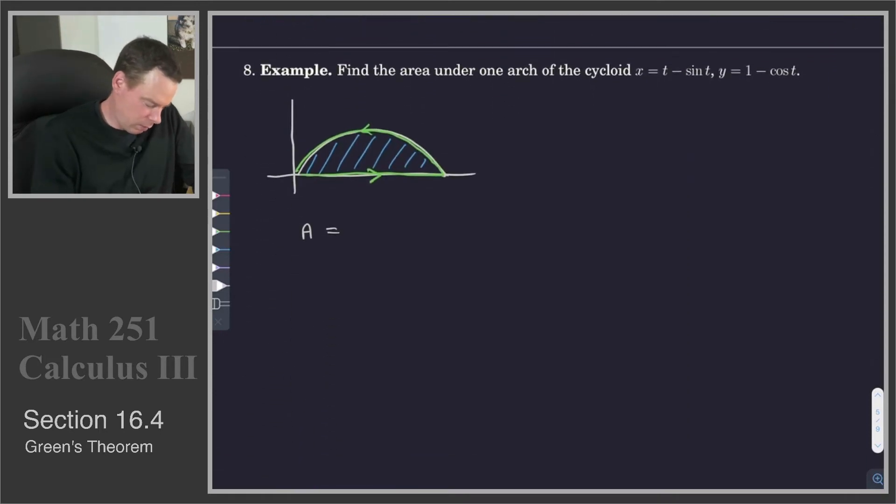It will be negative the integral y dx. So we are going to write it as negative the integral around our curve C of y dx. And our curve C is that curve C there I've drawn in the picture.